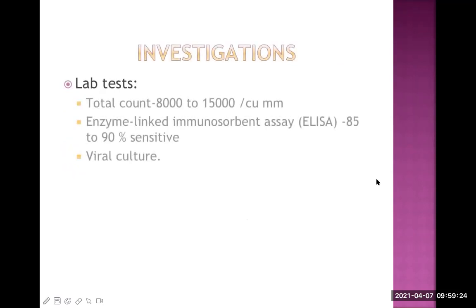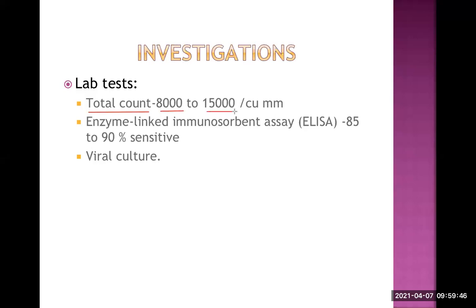What investigations do we perform in bronchiolitis? Blood count: the total count may be normal or elevated, around 8,000 to 15,000. On differential count, there may be lymphocytosis. ELISA — enzyme-linked immunosorbent assay — will detect antibodies and is 85 to 90% sensitive. Viral culture can be done if facilities are available, but it is not necessary for clinical diagnosis; it is mainly for research purposes.